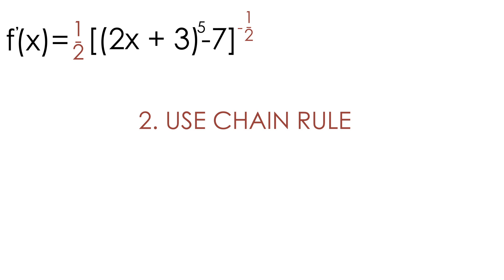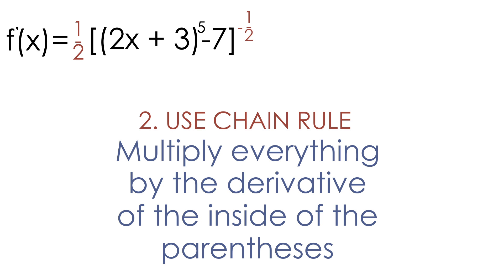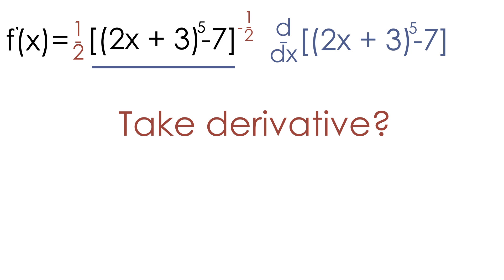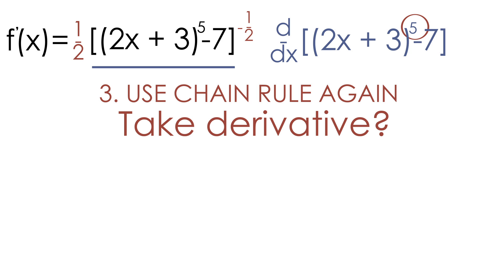What is the chain rule? The chain rule says that we have to multiply everything by the derivative of the inside of the parentheses — so the derivative of 2x plus 3 to the fifth, minus 7. How do we take the derivative of 2x plus 3 to the fifth? Once again, we have a parentheses followed by an exponent of 5, which means we have to use the chain rule again.